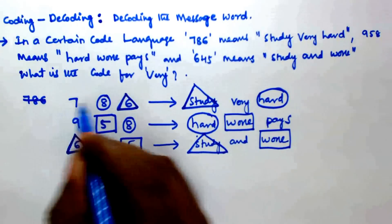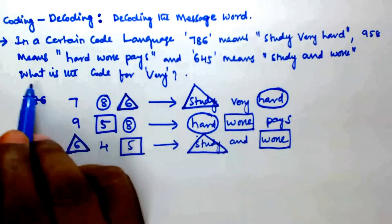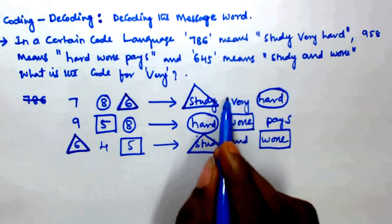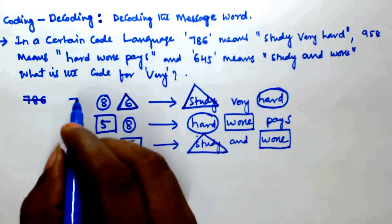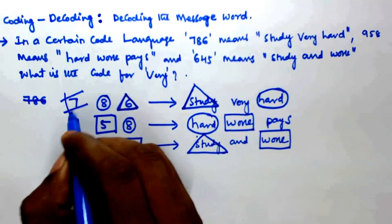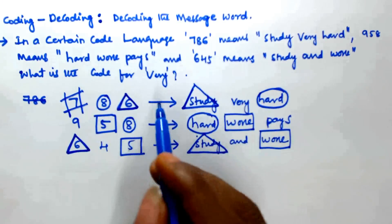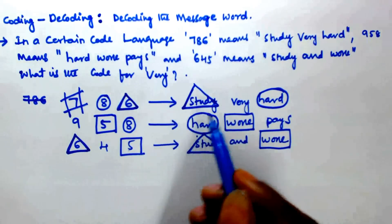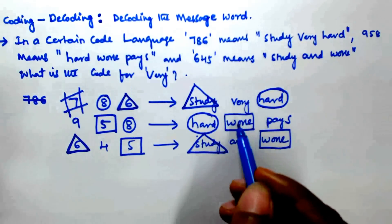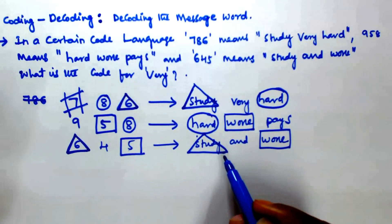So that means seven means 'very', nine means 'pace', and four means 'and'. Now we have to find the code for 'very' — very is in the first message and the only number left is seven. So seven is the code for 'very'. Use these special symbols to make it visually easy to identify codes. Thank you for watching — if you have any doubt, please leave a comment.